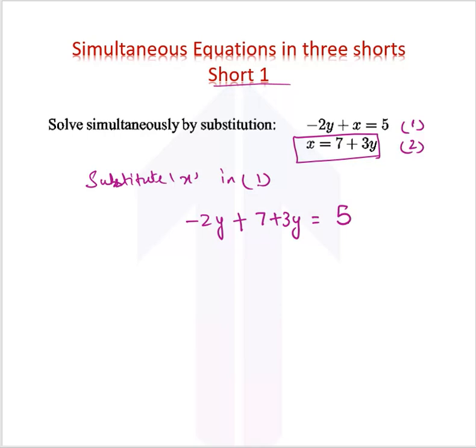This way, I am left with only one variable to solve. So minus 2y plus 3y gives me y plus 7 is equal to 5.